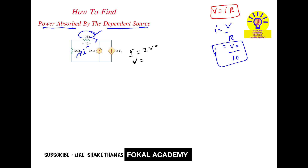Now apply KCL at this node. Observing carefully: the current from the branch, the 25 ampere source current, and the dependent current 2V0 are all entering the node. Since there are no outgoing currents, the sum equals zero. So: V0 over 10 plus 25 plus 2V0 equals 0. Simplifying this, we get V0 equal to minus 11.905 volts.